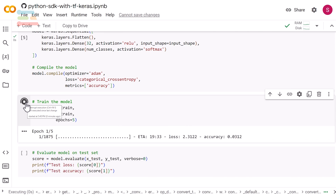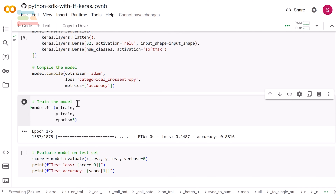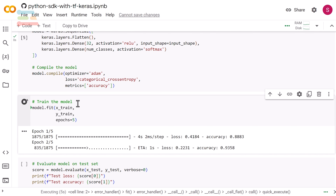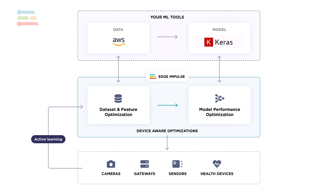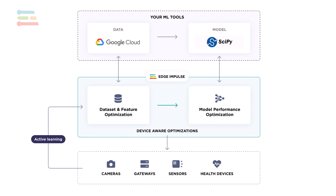You have the option of creating your own edge machine learning pipeline, which will involve an investment of time and money. Edge Impulse can make that process easier and can help bring your edge AI solution to life in a repeatable, robust fashion — working with the cloud data tools you might already be using, as well as the ability to bring your own model and optimize it for edge computing.